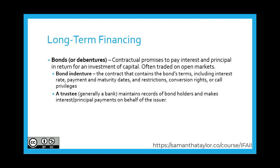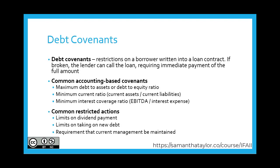A trustee, generally the bank, maintains records of the bondholders and makes the interest and principal payments on this debt. Covenants are restrictions on the borrower written into a loan contract. If a covenant is broken, the lender can call the loan, requiring immediate payment of the full amount. It's a contractual agreement, so broken means even by just a little bit.